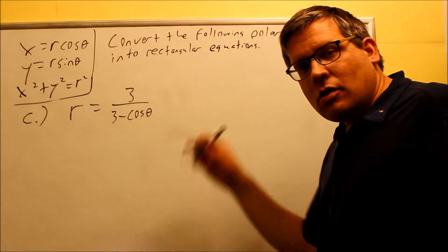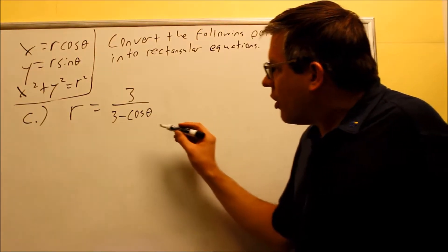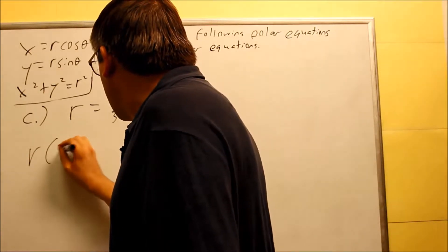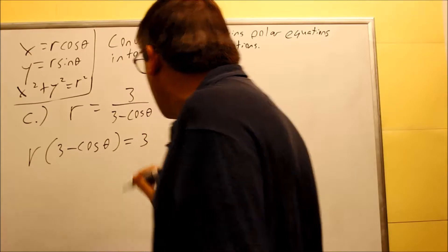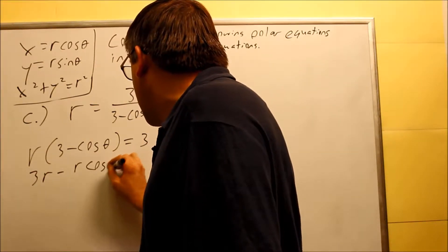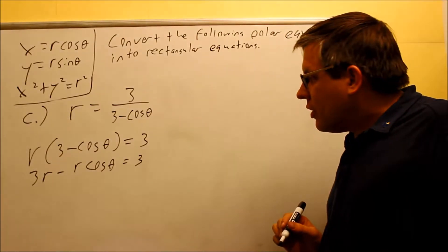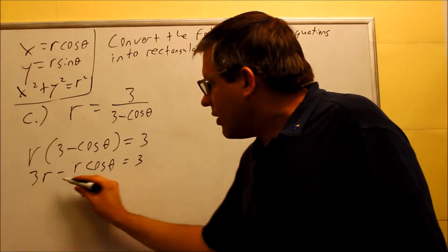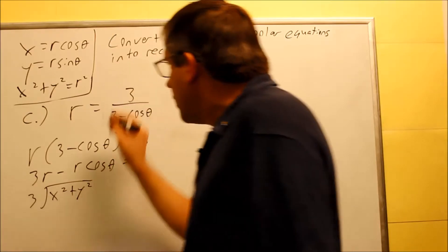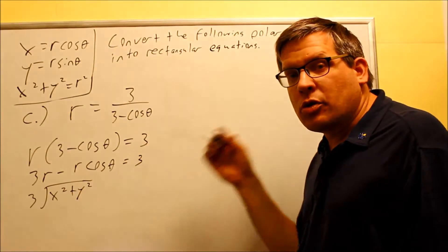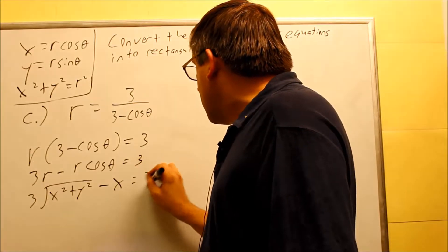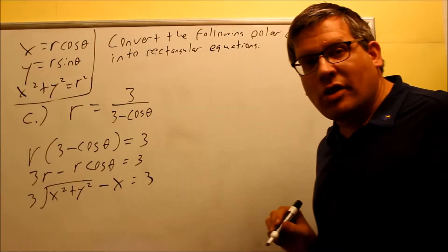For part C we have a fraction. The best way to do these problems is to clear the fraction first. I'm going to multiply both sides by 3 minus cosine theta, so I get r times (3 minus cosine theta) equals 3. Then I distribute the r: 3r minus r cosine theta equals 3. Now I look for substitutions. The r by itself becomes the square root of x squared plus y squared, and r cosine theta is a direct substitution — that whole thing turns into x.